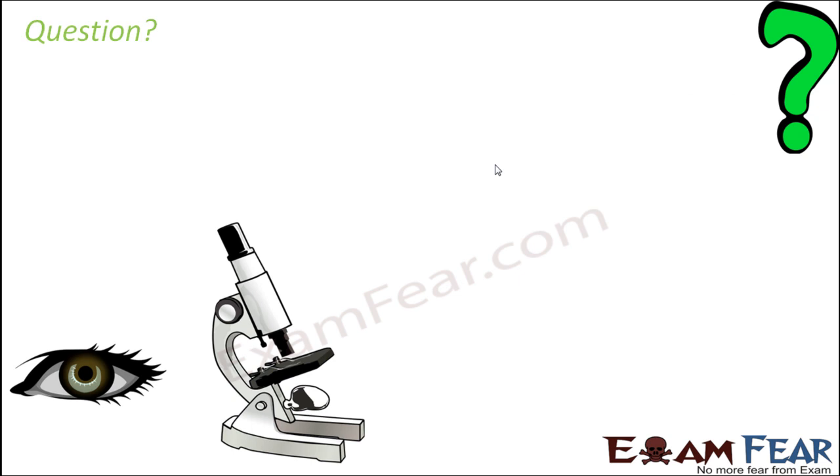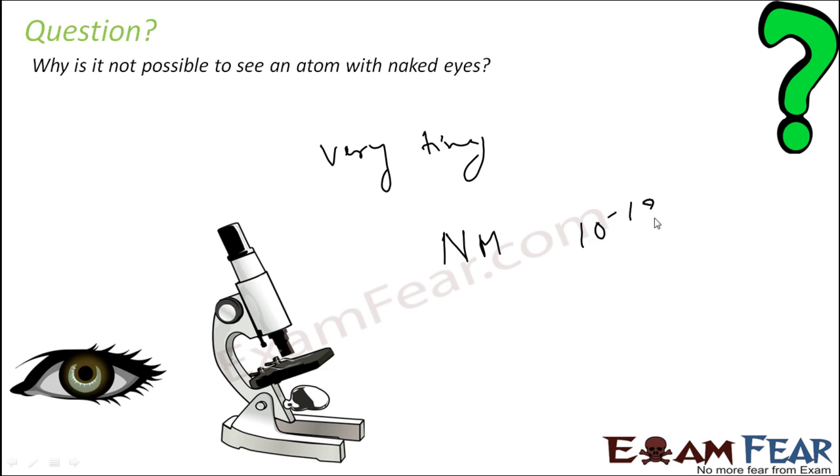Let's take some questions. Why is it not possible to see an atom with naked eyes? These atoms are very small, very tiny actually. They are measured in nanometers, 10 to the power -9 meters. They are so small that you can't see them with naked eyes.